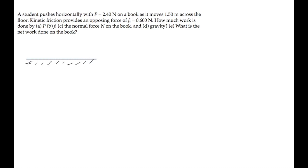The book in this problem is pushed across the floor with a force P of 2.40 N as it moves a distance of 1.5 meters. We're told that a kinetic friction force opposes it with a force of 0.6 N. Parts A through D ask us to calculate the work done by four different forces acting on the book.